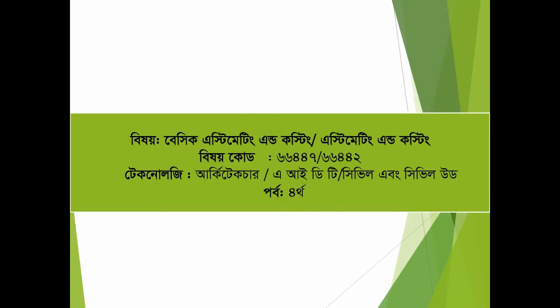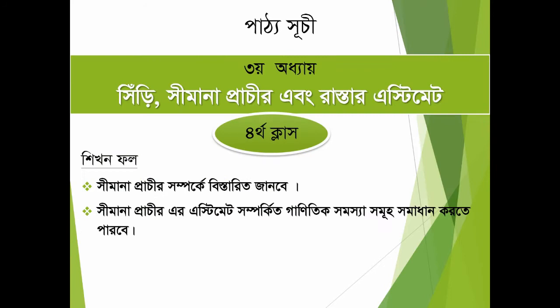We have the Basic Estimating and Costing which includes course code 266457, and then the Architecture, Industries and Technology 1 Gramm. Video Estimating and Costing includes course code 66442 and the Civilian is 2 Gramm, 1 Gramm, 3 Gramm, 3 Gramm.